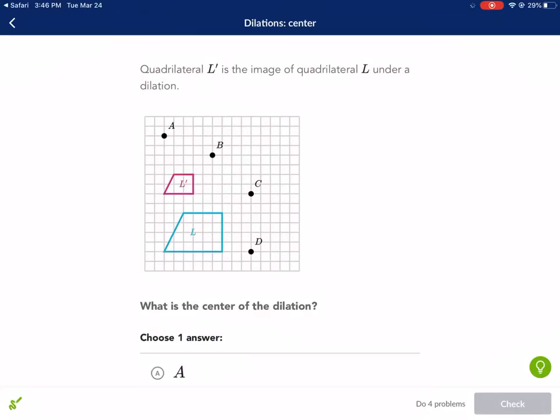Welcome back everyone, we're going to pick up where we left off with dilations. This time we're doing a Khan Academy exercise called dilations center. We need to keep in mind that dilations could be two possible things: they could be a growth or they could be a reduction, and both happen around a particular center.